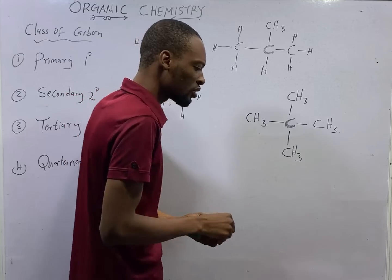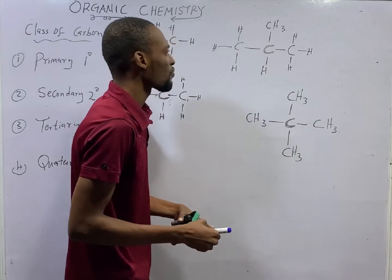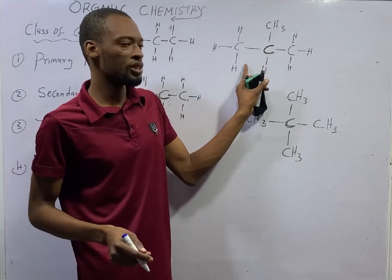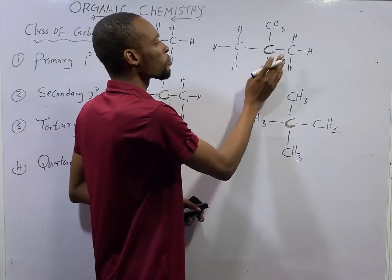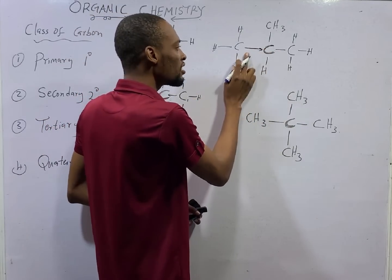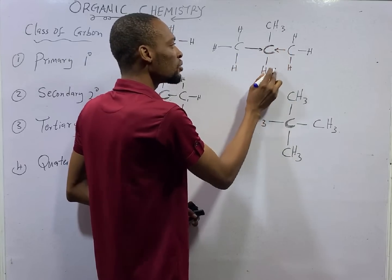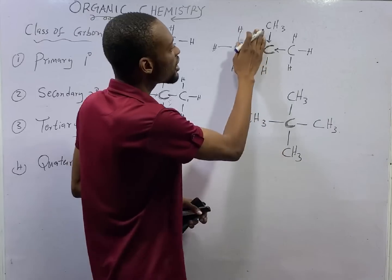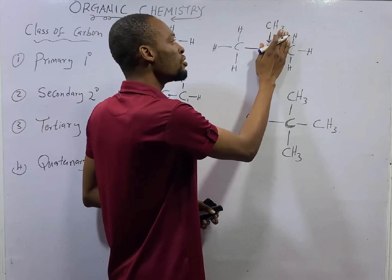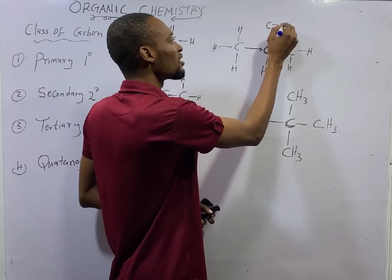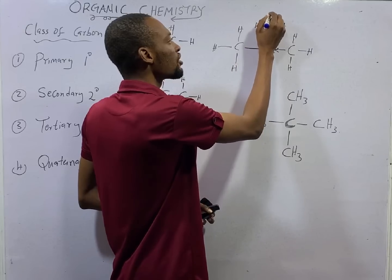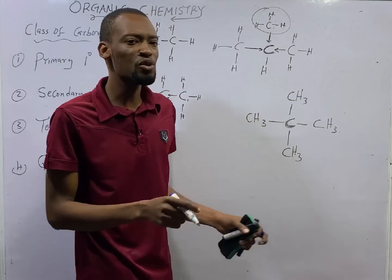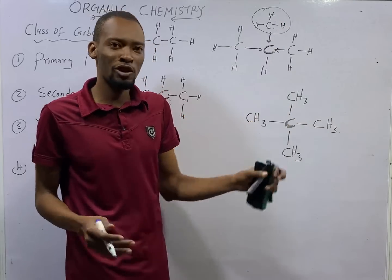Tertiary carbon is simply a carbon atom that has three other carbons directly linked to it. If you look at this carbon, this group is directly linked to it, this one is directly linked to it, and here is also directly linked to it. CH3 remains carbon and three hydrogens — you can rewrite this as CH3. This is a methyl group.